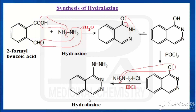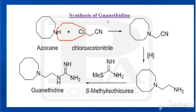Now we will see the synthesis of guanethidine. For this synthesis, the starting material is azocane — an eight-membered heterocyclic ring having only one nitrogen and no double bonds inside. If it had double bonds, it would be called azocine. This saturated compound is called azocane.